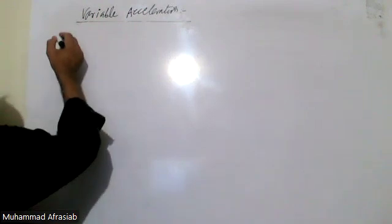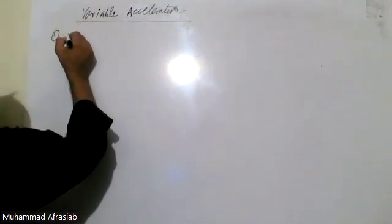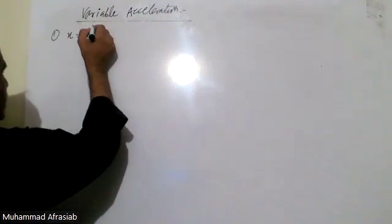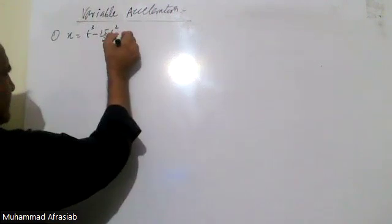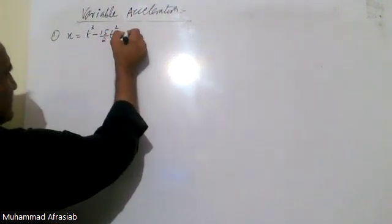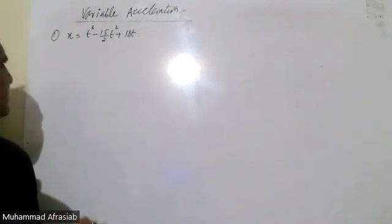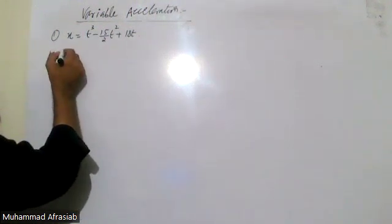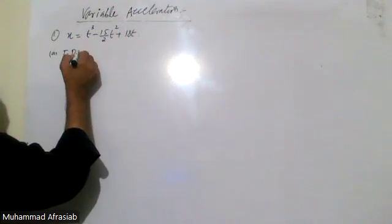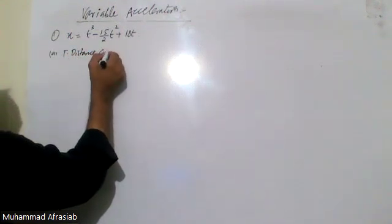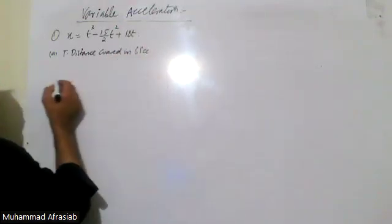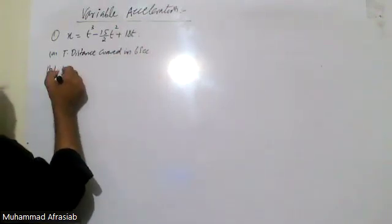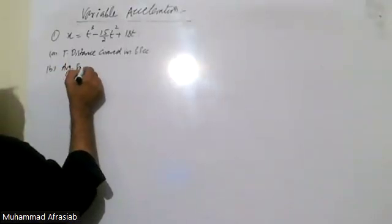We are starting question number 1, where x, the displacement, is equal to t³ minus 15/2·t² plus 18t. We are going to find out the total distance covered in 6 seconds, and the average speed during this distance.